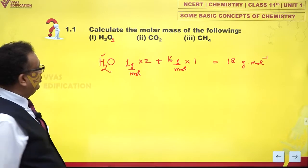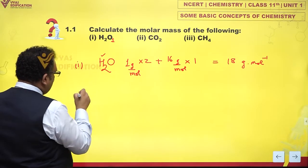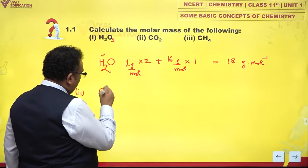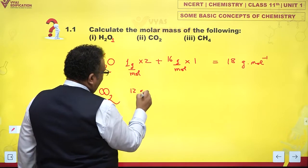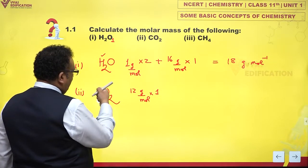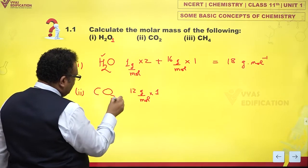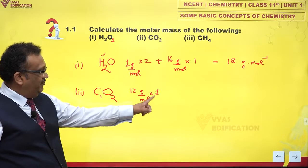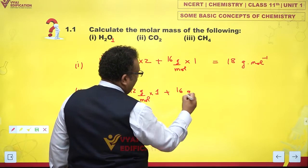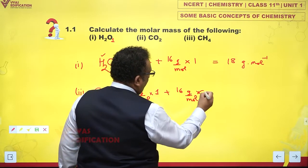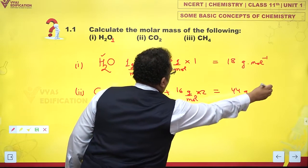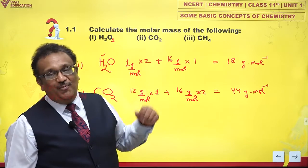What about CO₂? Please don't forget — you must write the correct units. CO₂: carbon is 12 grams per mole and there is one atom of carbon. If you look at CO₂, it is C₁O₂ — one atom of carbon and two atoms of oxygen. One atom of oxygen is 16 grams per mole and you have two. If you just add up you get 44 grams per mole. This is the molar mass of carbon dioxide.